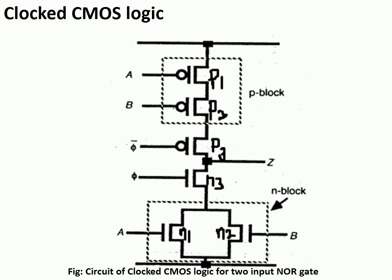Consider an example: if φ is logic level 1, then φ-bar will be 0. At the gate of N3, 1 is applied and at the gate of P3, 0 is applied — meaning both transistors will be turned on. In that case, the Z value is evaluated depending upon inputs A and B, and Z will be connected to either VDD or VSS.